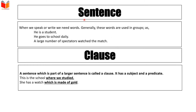اب ہم sentence کو discuss کرتے ہیں۔ When we speak or write we need words; generally these words are used in groups۔ جب ہم کوئی بات کرتے یا لکھتے ہیں تو ہمیں الفاظ کی ضرورت پڑتی ہے اور یہ الفاظ عام طور پر group کی شکل میں استعمال ہوتے ہیں۔ For example: 'he is a student' — اس کے اندر چار words ہیں۔ 'He goes to school daily۔' 'A large number of spectators watch the match۔' ایسا الفاظ کا مجموعہ جو مکمل طور پر اپنی sense clear کر دے اسے sentence کہا جاتا ہے۔ یہ ساری examples sentences کی ہیں۔